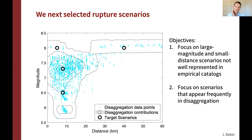Zooming into those conditions of interest on the magnitude-distance plot, the dots show disaggregation data points and black contour lines show probability density from kernel smoothing, indicating the most likely cases. We selected four target rupture scenarios shown with heavy black circles, focusing on the largest magnitude and closest distance ruptures important in disaggregation. There are plenty of recordings of magnitude 6 ruptures; it's really the magnitude 7.5 or 8 ruptures where we benefit from supplementing the recorded catalog.